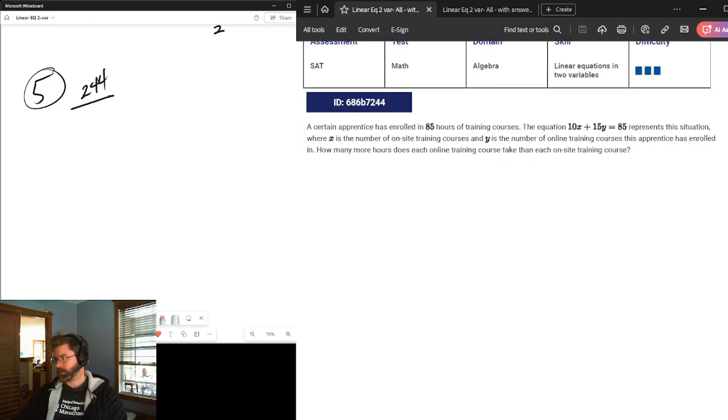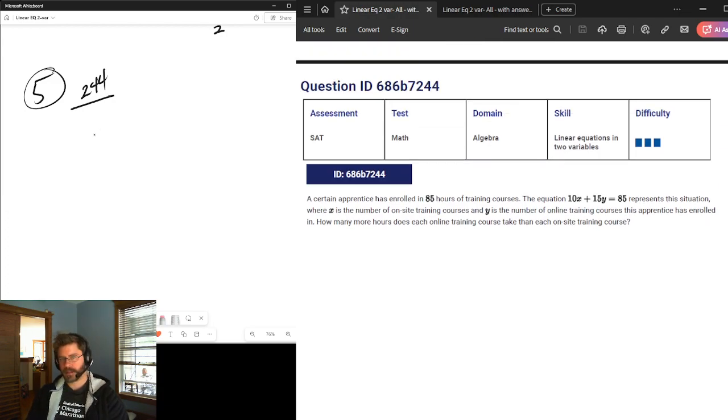Code ending 2 for 4. We've got a standard form of linear function here. 10x plus 15y. 85 hours of training courses. Okay, so the 85 corresponds to the total. So, 10x and 15y must be the total number of hours in each course, x and y, I assume. But let's read. X is the number of on-site courses. Y is the number of online courses. So, they're probably going to ask us what the 10 or the 15 mean.